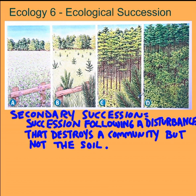Notice that at the end we end up at a forest again. In most land ecosystems the community you get at the end is going to be some kind of forest, and we call that the climax community — the final stable community at the end of succession. Now depending on the climate, the annual temperature and rainfall, you may get a different kind of forest. It might be a rainforest, a coniferous pine tree forest, or a deciduous forest with leaves. It depends on the conditions.